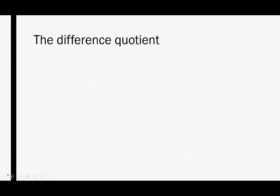You can almost figure it out based on its name. Difference indicates subtraction, and quotient indicates division. And that's basically what we're looking at — we're going to subtract things and we're going to divide things. But what it is, is it's a ratio that's widely used in calculus.